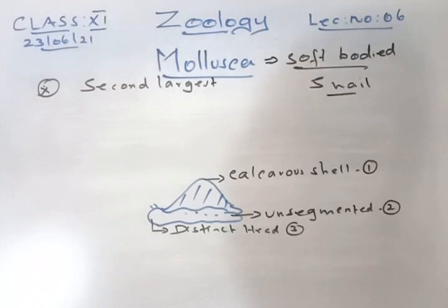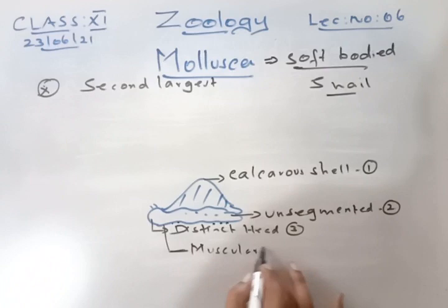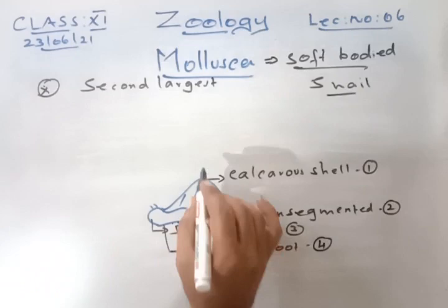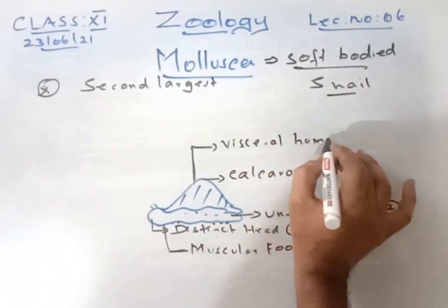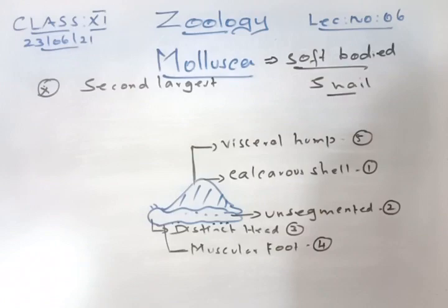Fourth, Mollusca has a muscular foot. Fifth, it has a hump-like structure called the visceral hump, which contains the important organs.